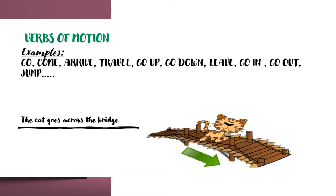Look at this picture. The cat goes across the bridge. The verb of motion here is 'go', and the preposition of movement is 'across'.